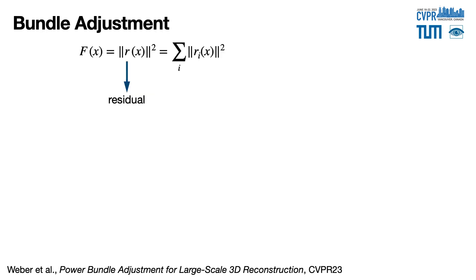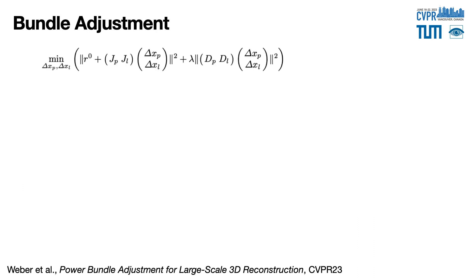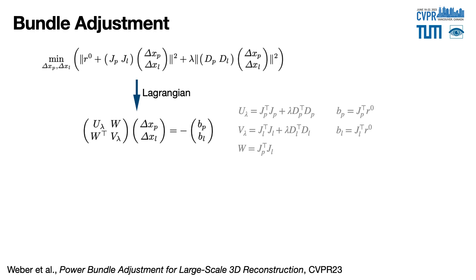Let's keep in mind this proposition and go back to the bundle adjustment problem. The objective is to minimize the sum of square residuals. It is usually solved with a Levenberg-Marquardt algorithm based on the first-order Taylor approximation of R. A regularization term lambda is added to improve the convergence and give the damped linear least squares problem.